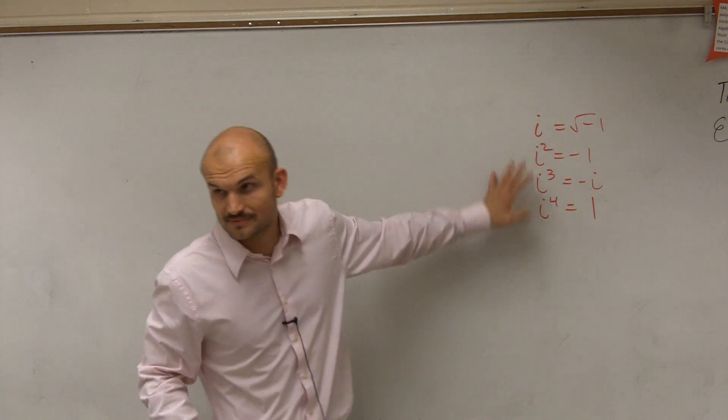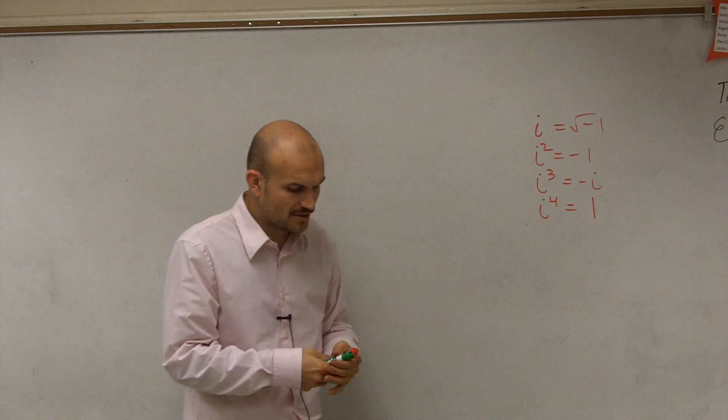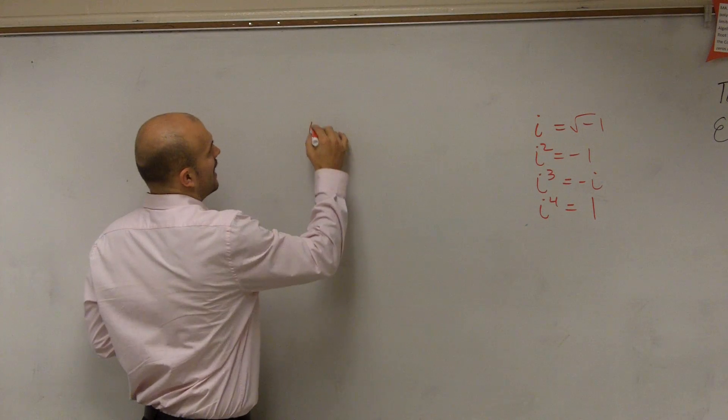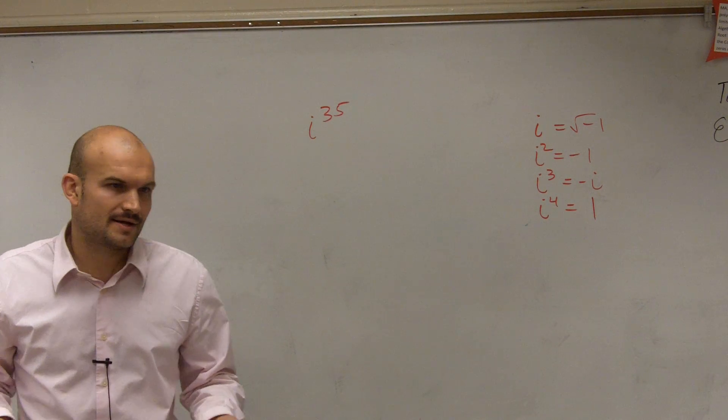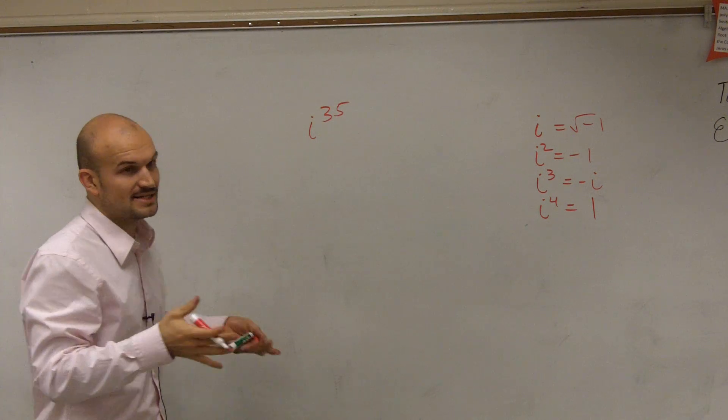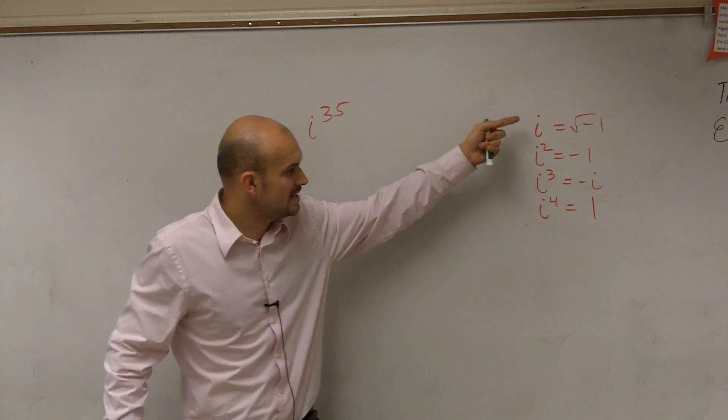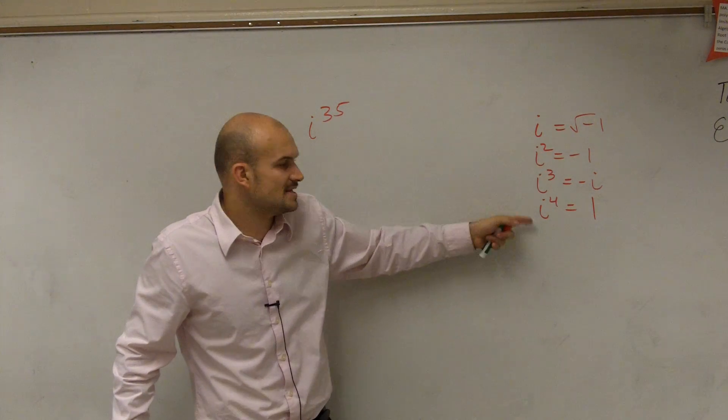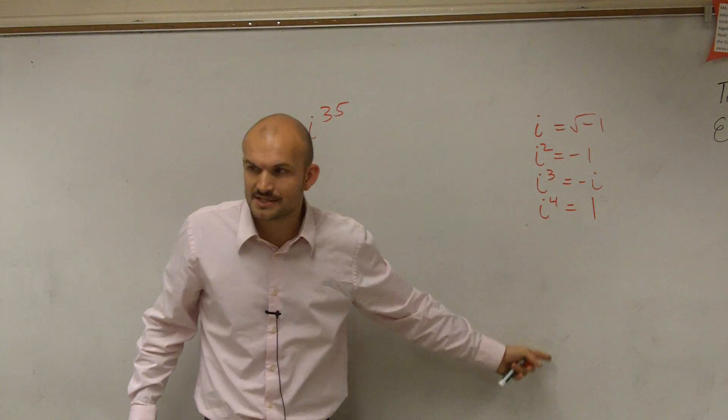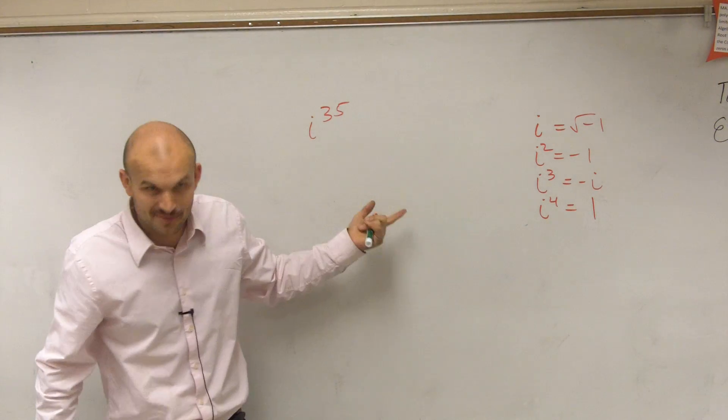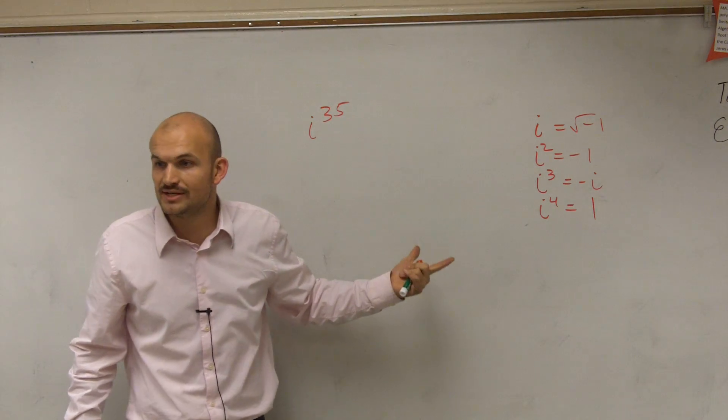So we talked about these. And then if I asked you, what is i to the 35th power? How are we going to do something like that? Well, what we want to do is continue down this method. Because if we are able to figure out step by step how to get to i to the fourth, we can follow that same method to get to i to the 35th. It's going to take us doing it 35 times, but we can do it.